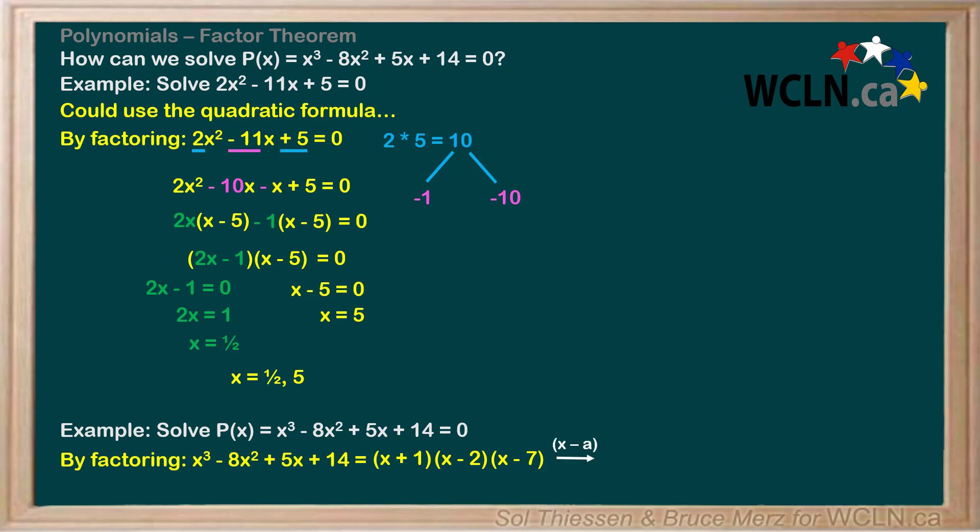Remember we observed factors of the form x - a correspond to roots at x = a. With that in mind, the factor x + 1 can be rewritten as x - (-1), and the roots can be found by inspection. The three roots from these three factors are -1, 2, and 7.